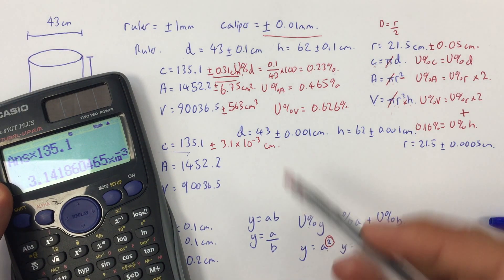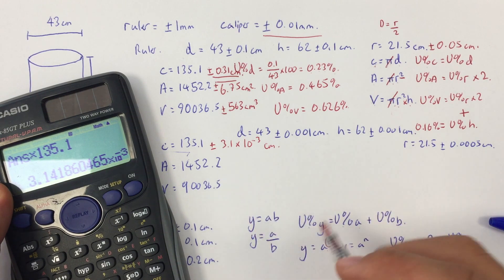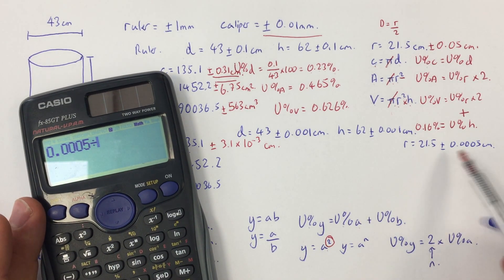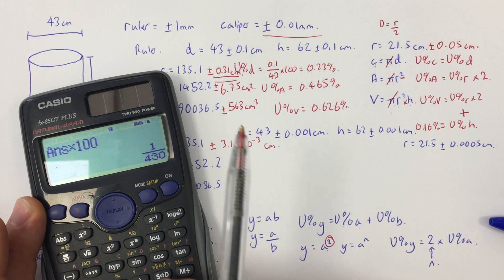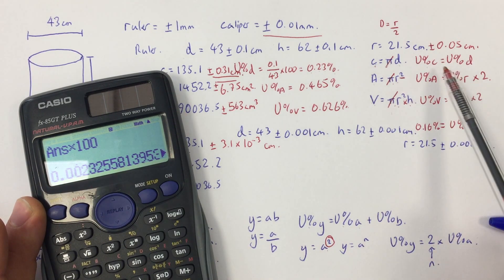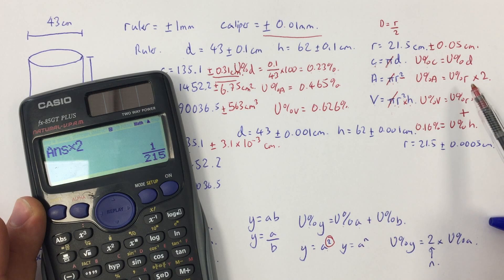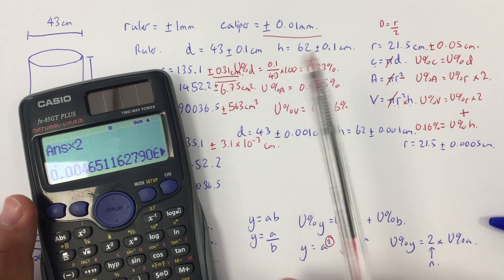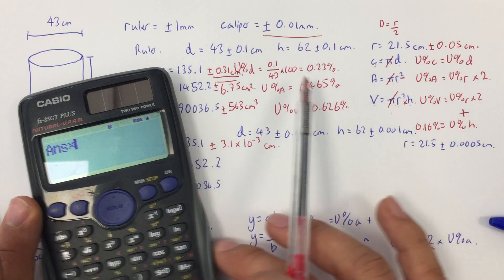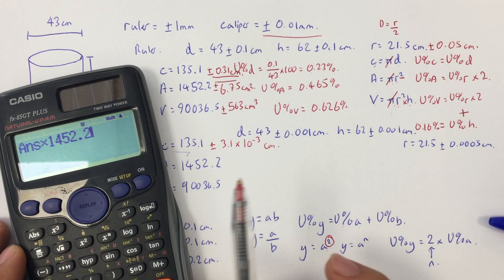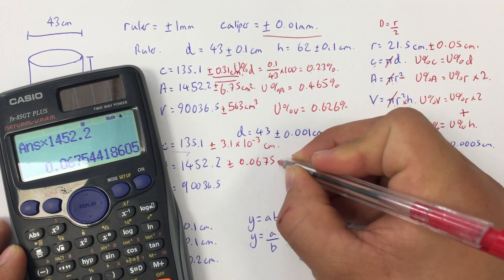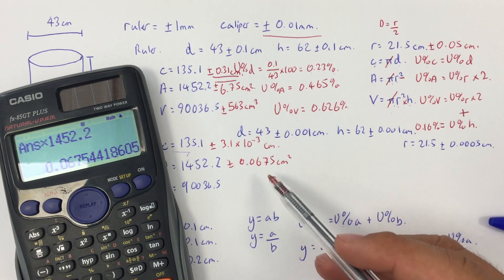The absolute uncertainty is 100 times smaller because the equipment is 100 times better. For the radius, the percentage uncertainty is the same as the diameter's, and again 100 times smaller than before. Multiplying by 2 gives the percentage uncertainty in area. Converting to absolute: divided by 100, times 1,452.2 gives plus or minus 0.0675 centimetres squared — again, 100 times smaller.